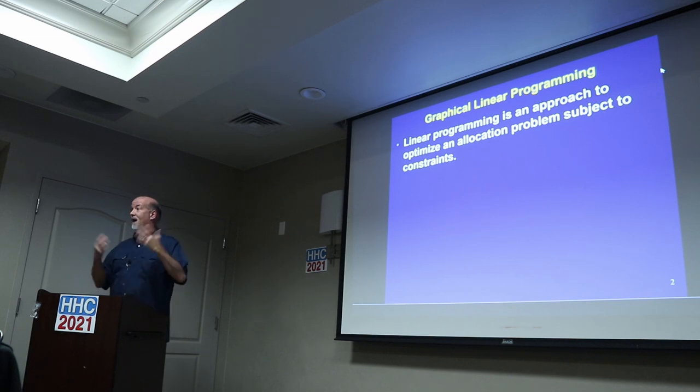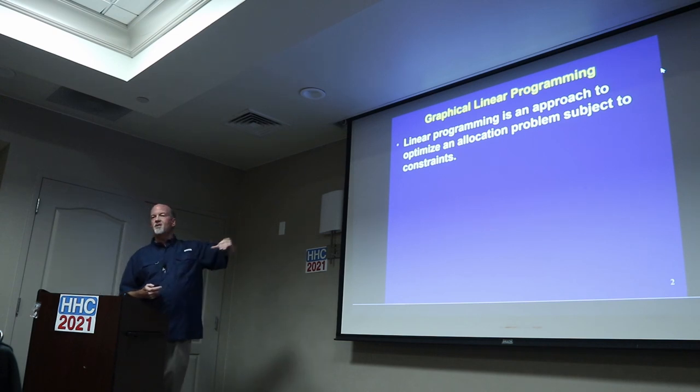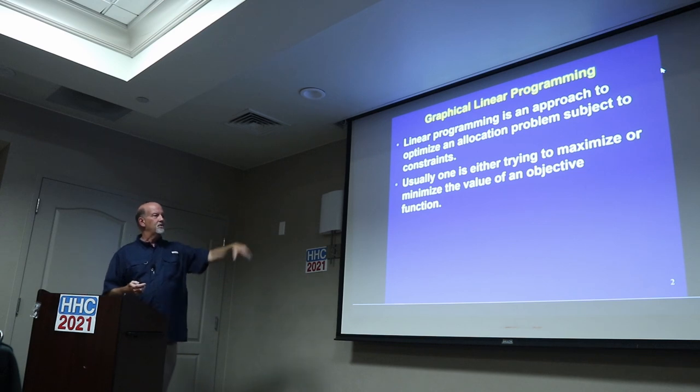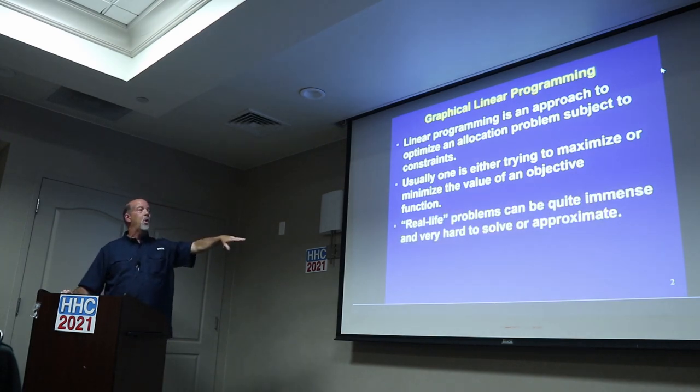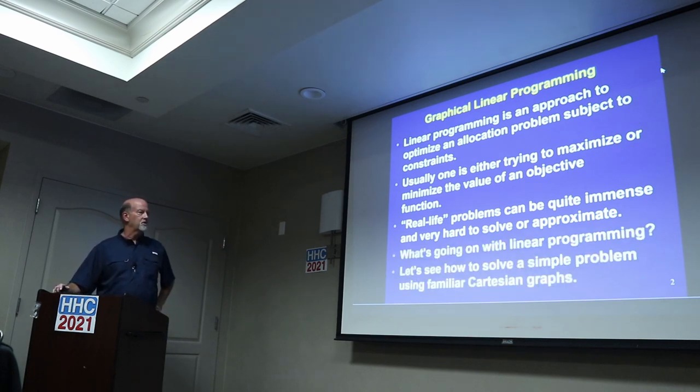Usually those are going to be either to maximize something or minimize something. If you're maximizing, you may be trying to maximize profits. The other side of it is you may want to minimize cost and the traveling salesman problem. You're trying to minimize distance or something like that. You can't just make a billion units, so you've got some constraints. Real life problems can be quite immense and are very hard to solve or approximate.